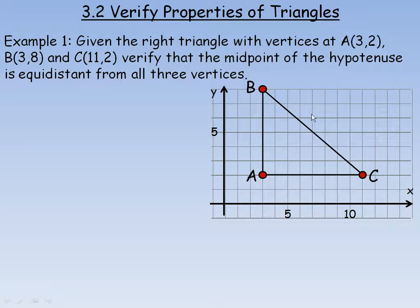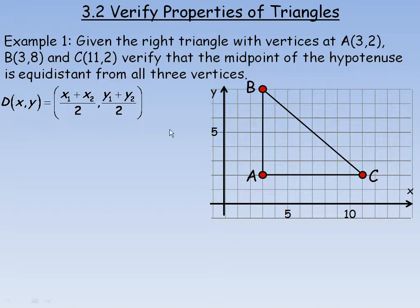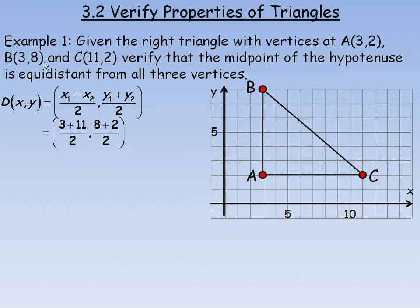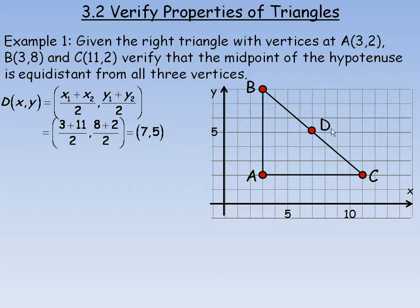So the first thing we should do is find where the midpoint is. Here's my midpoint formula. Now we'll find the midpoint of BC. So we'll add the x-coordinates divided by 2 — 3 and 11 are the x-coordinates. And we'll add the y-coordinates and divide by 2 — 8 and 2 will be added then divided by 2. So 3 and 11 is 14 divided by 2 is 7. 8 and 2 add to 10 divided by 2 is 5. So the midpoint of the hypotenuse, which we'll call D, is the point (7, 5).